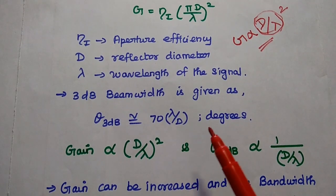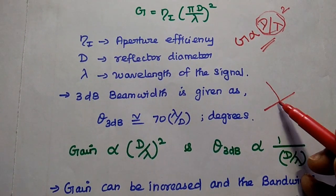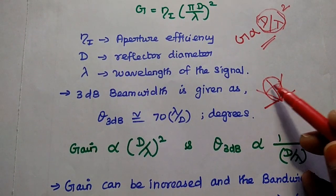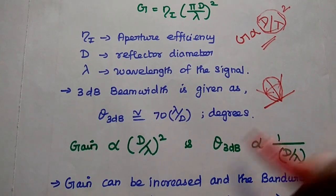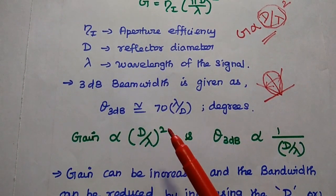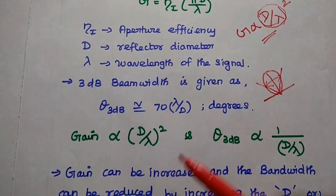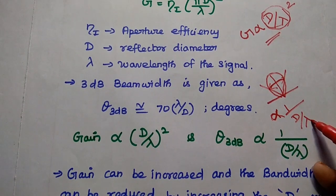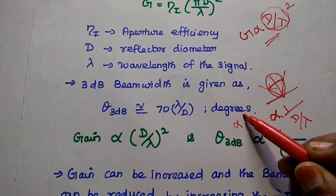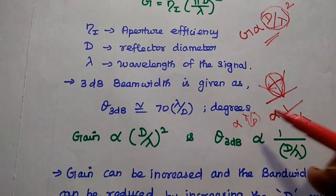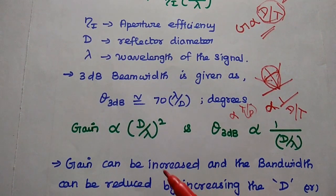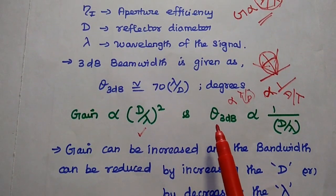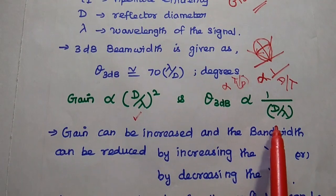Next, the 3 dB beamwidth. As we know, beamwidth is a very important concept in antenna systems. The 3 dB beamwidth is given by θ₃dB ≈ 70λ/d. So the beamwidth is inversely proportional to the ratio d/λ, or equivalently, directly proportional to λ/d. From these two analyses, gain is directly proportional to (d/λ)² while beamwidth is inversely proportional to d/λ.